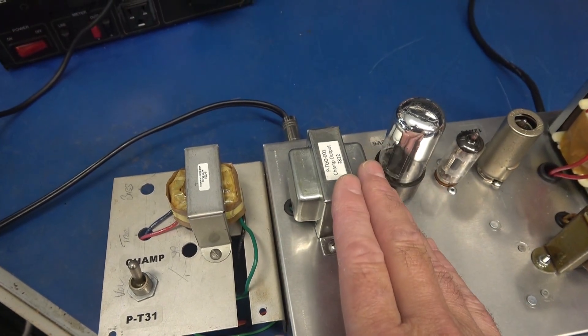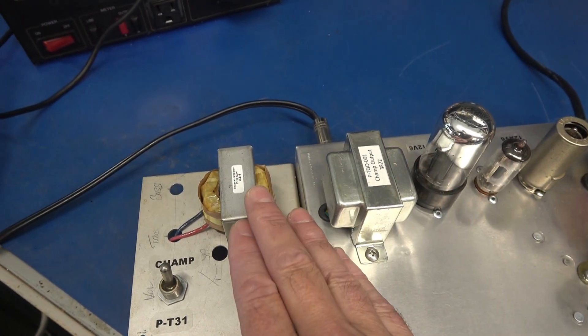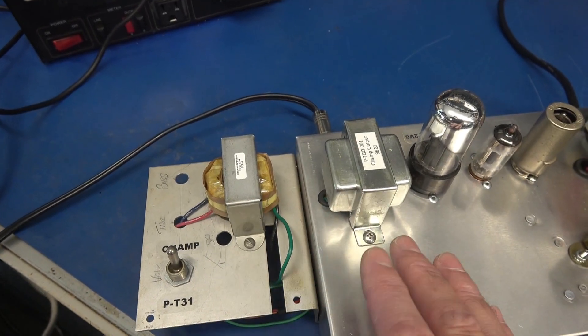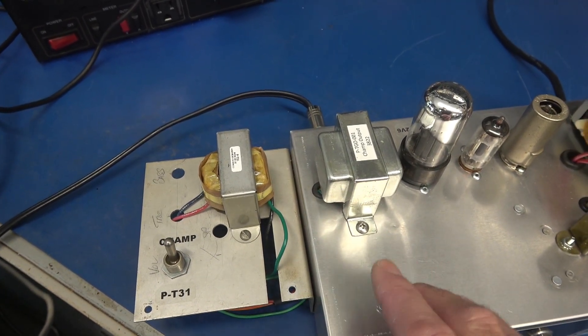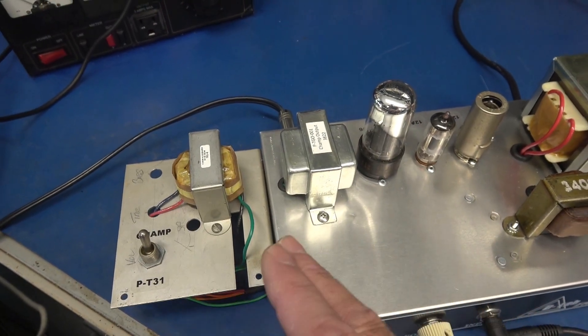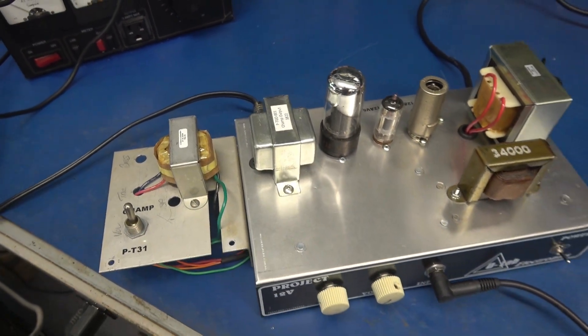So this is the CHAMP output transformer. This is the P-T31. Both of these are sold exclusively by Amplified Parts. They're great transformers, but I'm interested to hear the tone difference. So let's test.